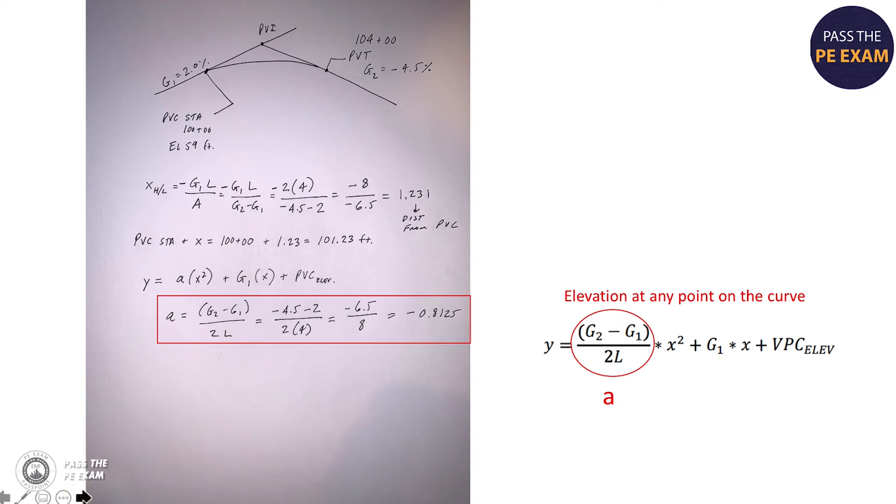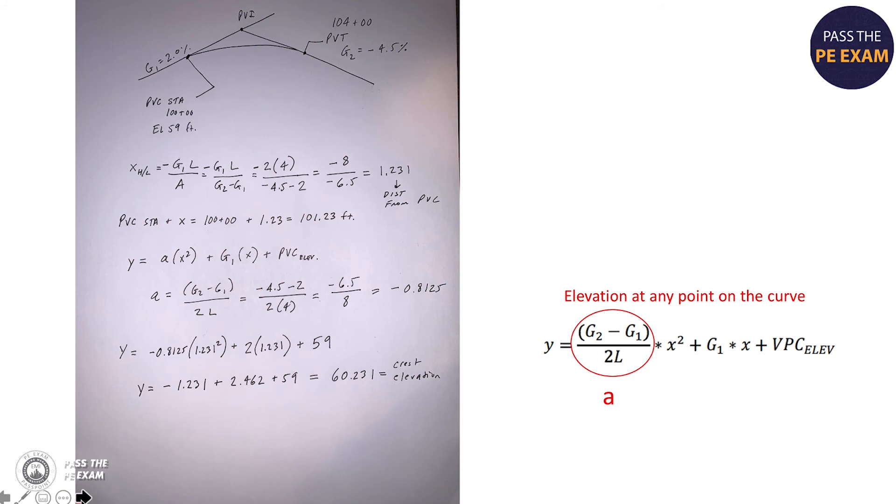So now that we've solved the A value, you can look at this equation in yellow, our Y equation, and we have all the variables. We have A, we know X, we solved it earlier, which is 1.231. We have the grade and we have the elevation, the PVC elevation. So now what we can do is we can go ahead and solve for Y at the high point by using the X from the high point of 1.23. And you can see here, I've plugged in all the numbers and I've come up with a crest elevation of 60.231.